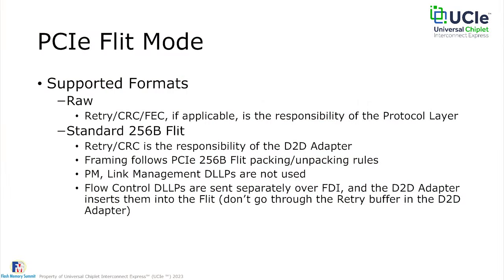PCIe 6.0 introduced a FLIT mode with a 256-byte FLIT. UCIe supports this as well. Within the PCIe FLIT protocol mode, there is also support for raw mode — you could take the PCIe FLIT as-is and send it across the die-to-die link in raw mode, or use UCIe standard mode where retry and CRC are handled by the die-to-die adapter. PM and link management DLLPs are not used since we have the sideband link. Flow control DLLPs, which don't go through the retry buffer in PCIe, are sent separately on FDI, and the adapter inserts them at the right position in the FLIT.